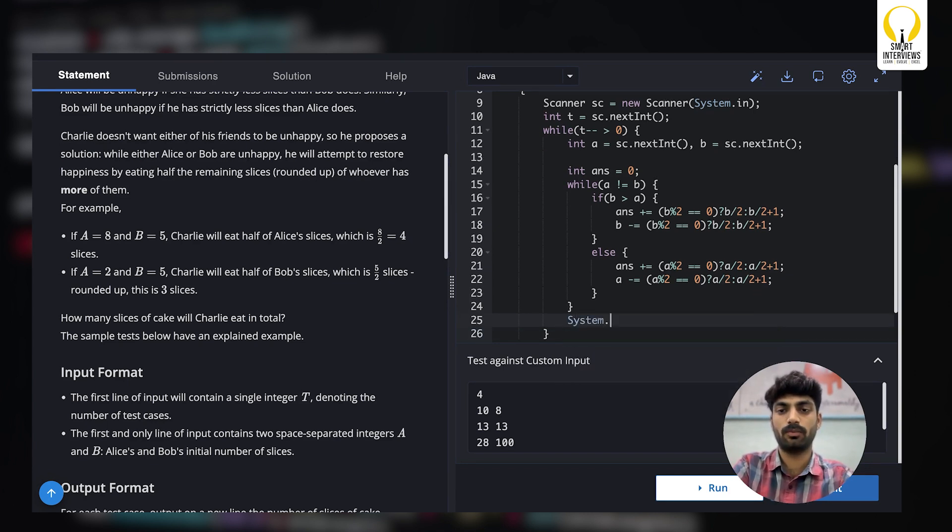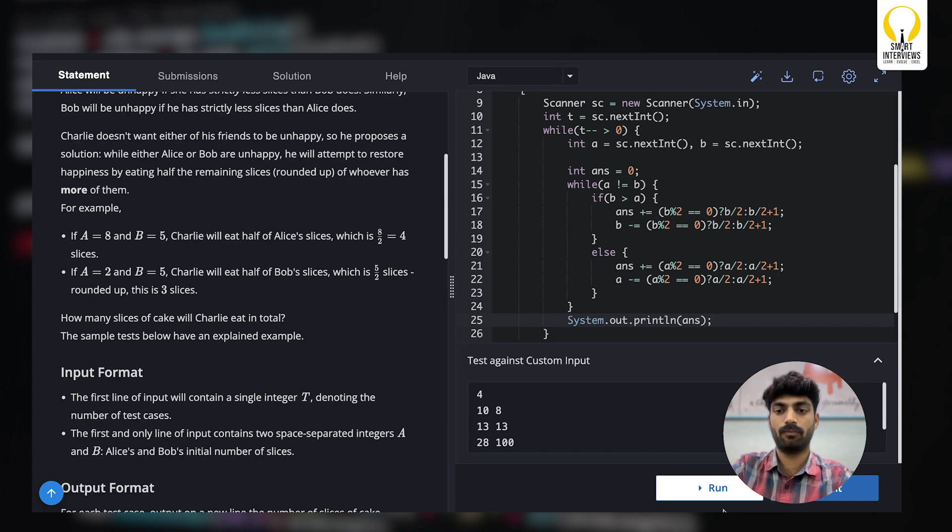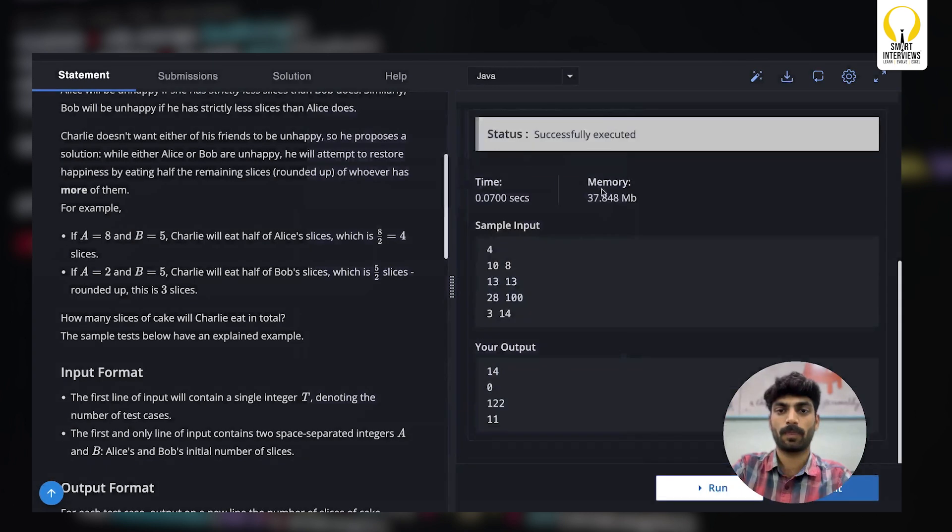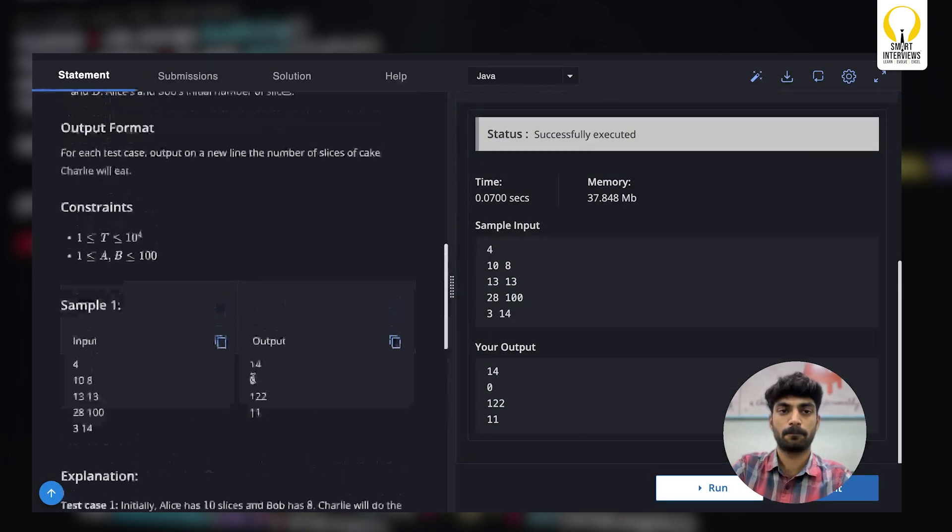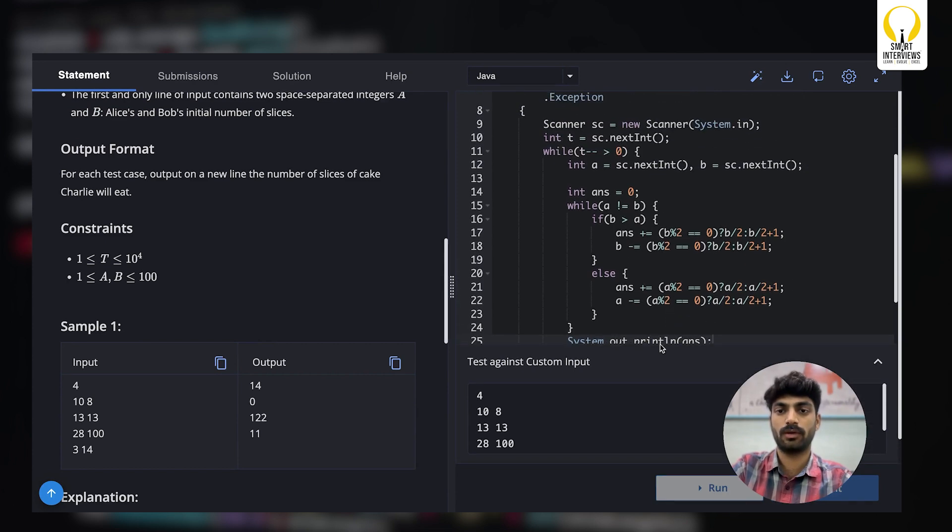At the end once Alice and Bob are happy you will come out of this loop and you will have your result in this variable right. Yeah let's run it. So it is working as expected, let's see by submitting it.